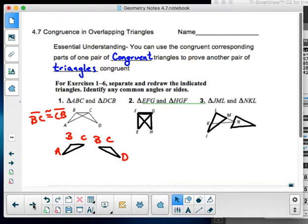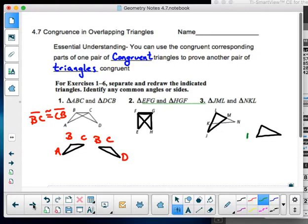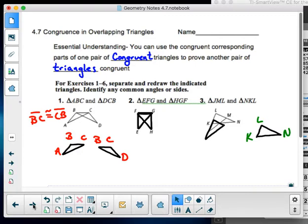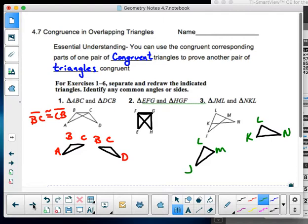In problem three, you'll notice that I have angle L that's in common instead of a side. So here, when I pull this out, I've got KLN. And here, I will have LMJ. But angle L is congruent to angle L.